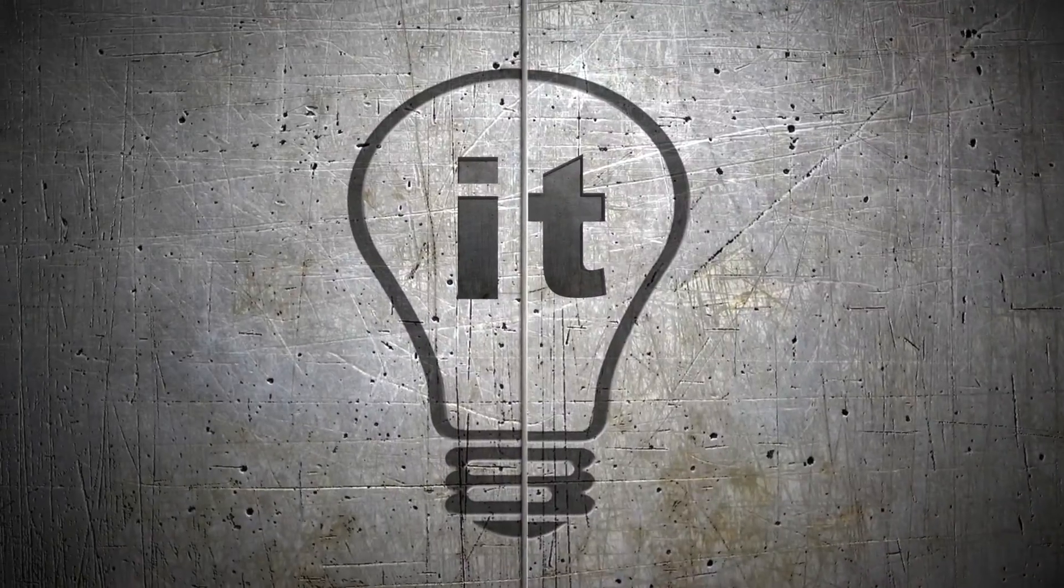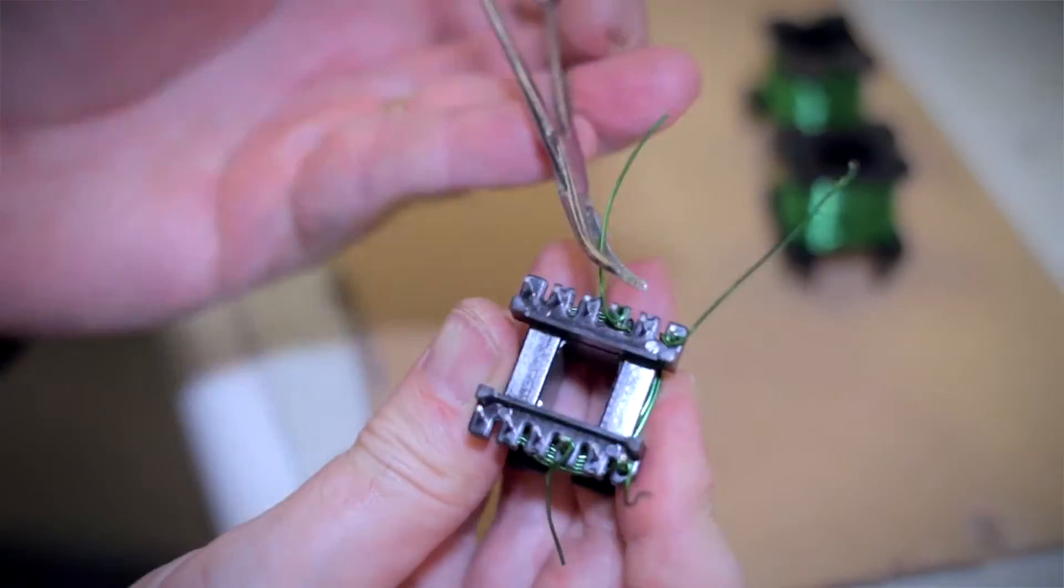Now that we've finished winding our transformer, let's go solder it. The next step is to solder the primary on two wires and the secondary on the other two for a good connection.